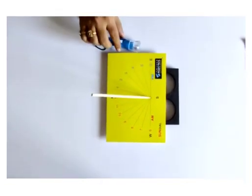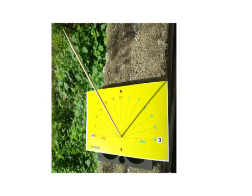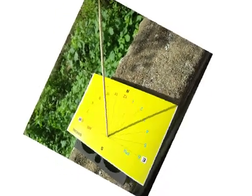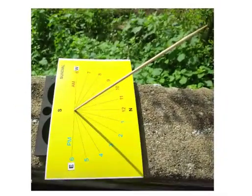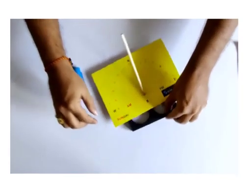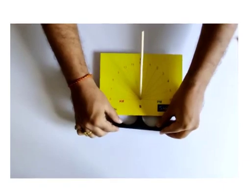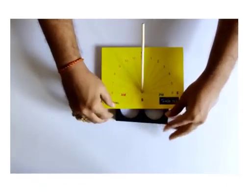Your sundial is ready to check the time. Keep the setup in the sunlight undisturbed, facing the tip of the stick towards northern direction. As time passes, the shadow of the stick changes its place according to the movement of sun.